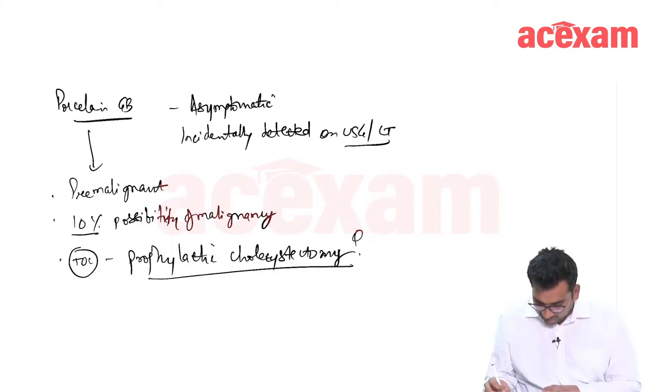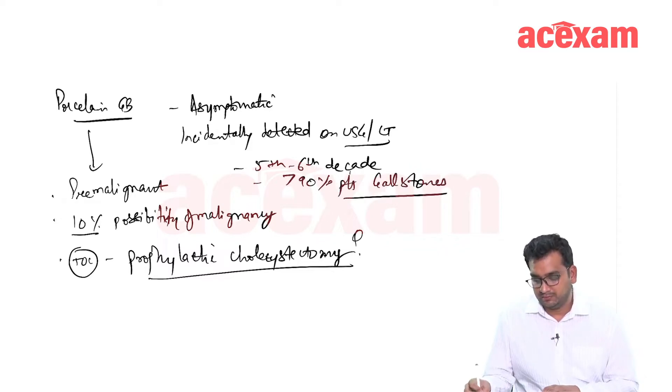It is generally seen in fifth to sixth decade and more than 90 percent patients have gallstones associated. These are two other important points.